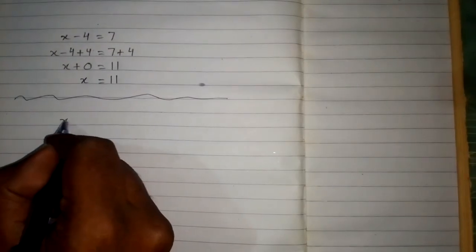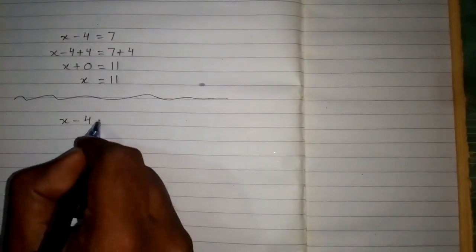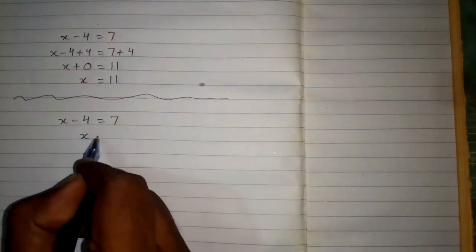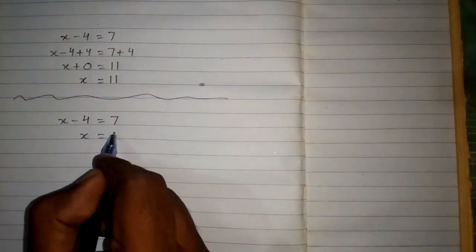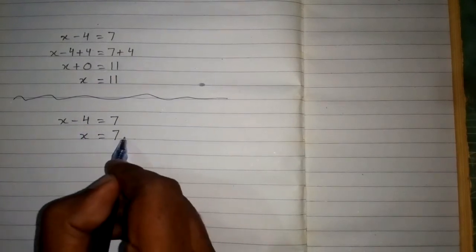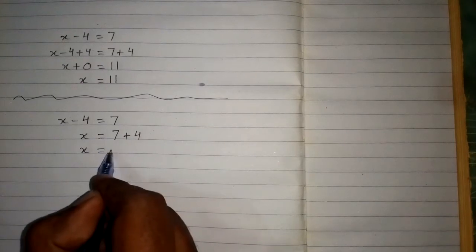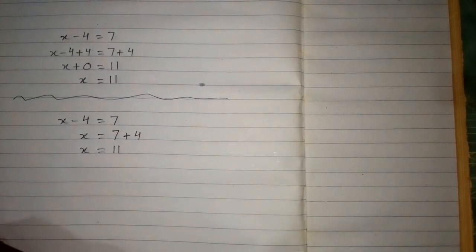We can also find the solution by another method. The equation is x minus 4 equals 7. We can take this minus 4 to the other side of the equation, where it becomes plus 4. So x equals 7 plus 4, which is 11.